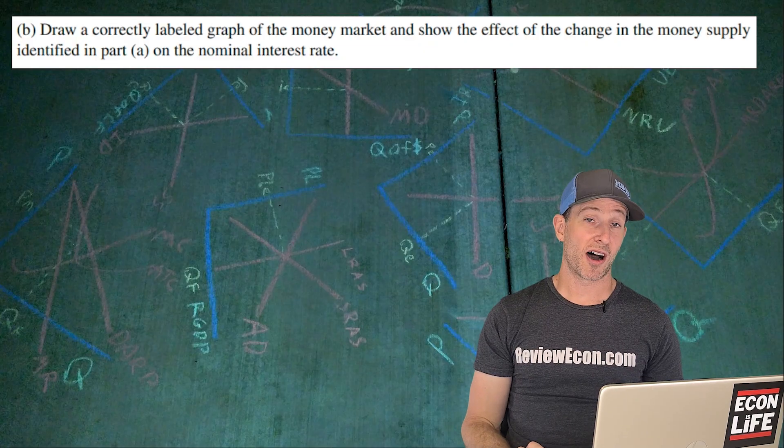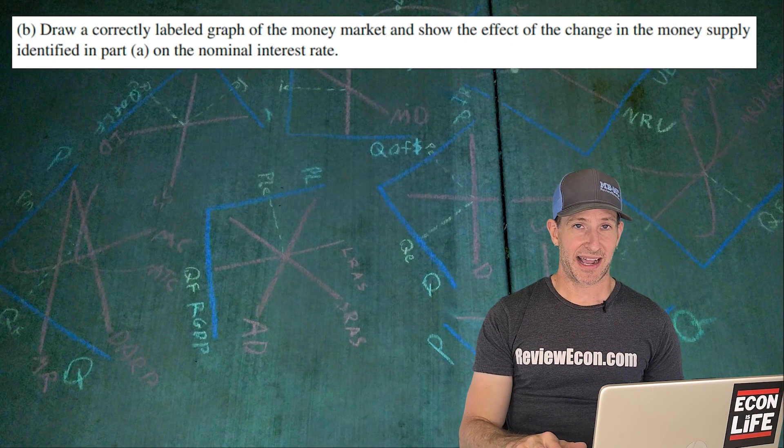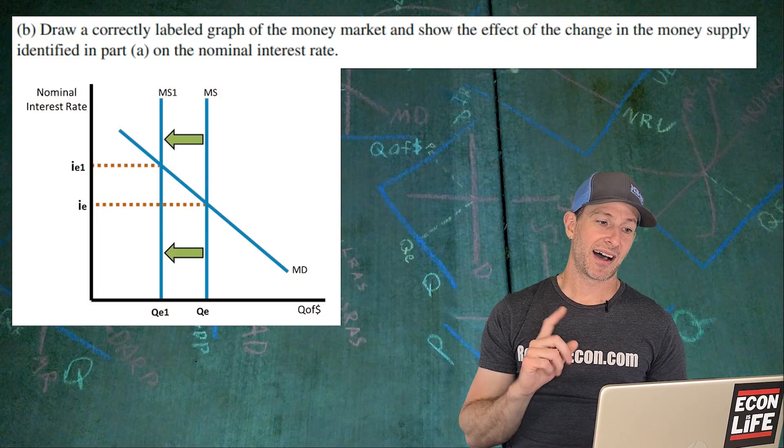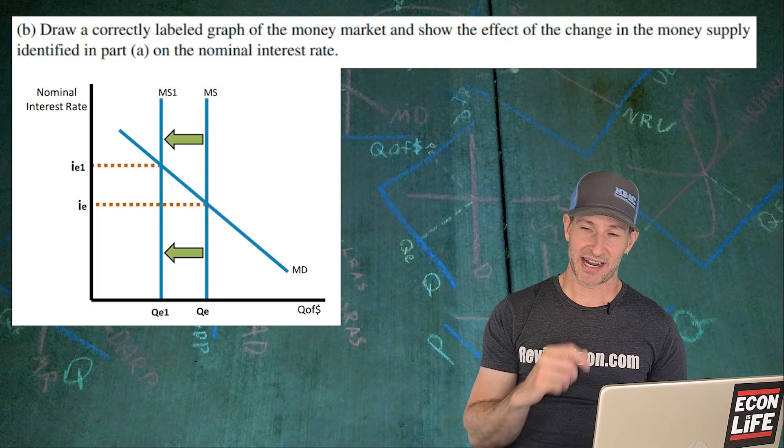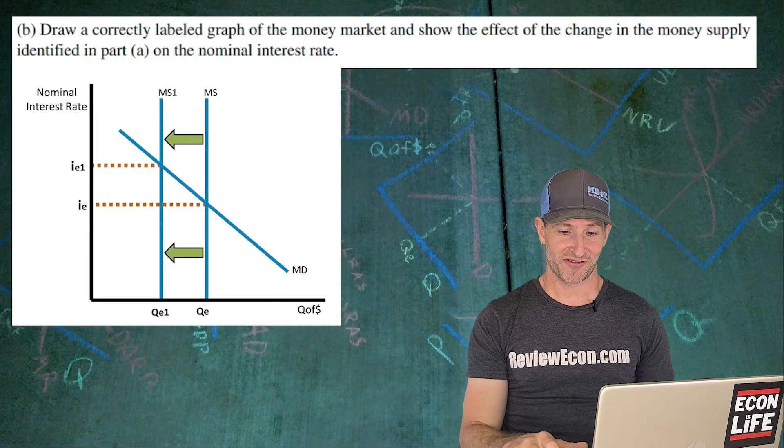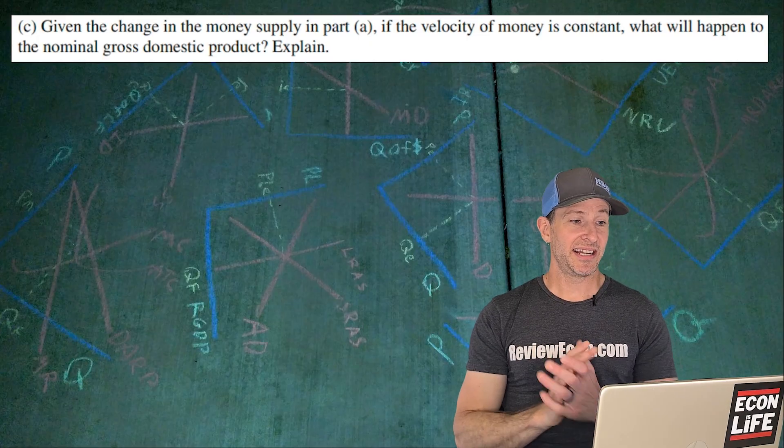Next, we're going to draw a money market graph that shows the change we just did and show the impact on that nominal interest rate. So we have a decrease in the money supply that increases the nominal interest rate. You should have a vertical money supply curve there with a downward sloping money demand curve.